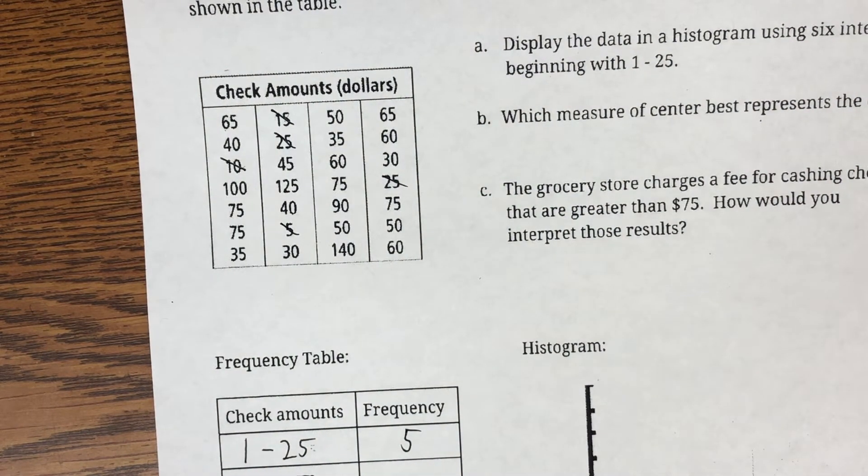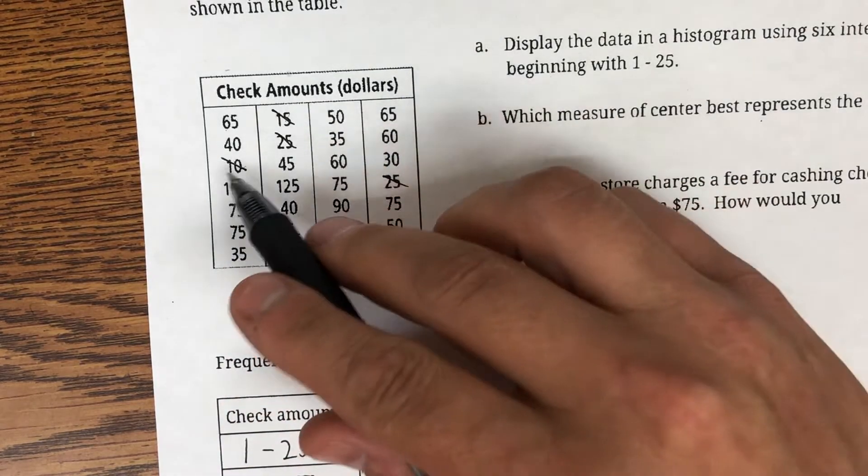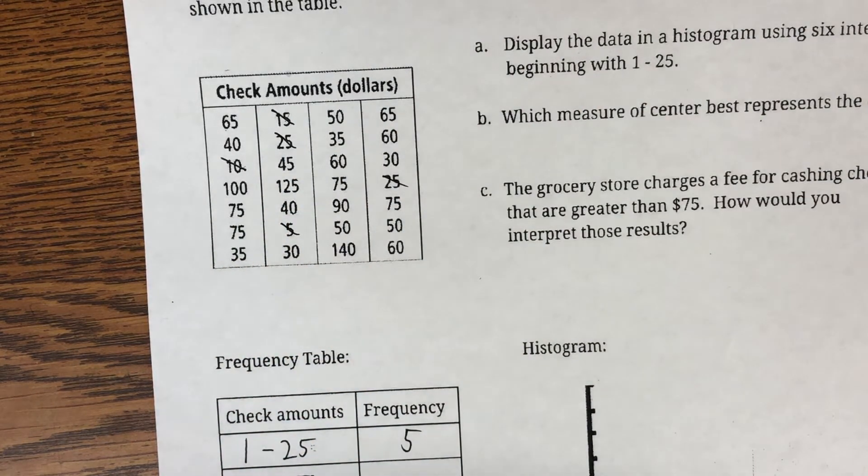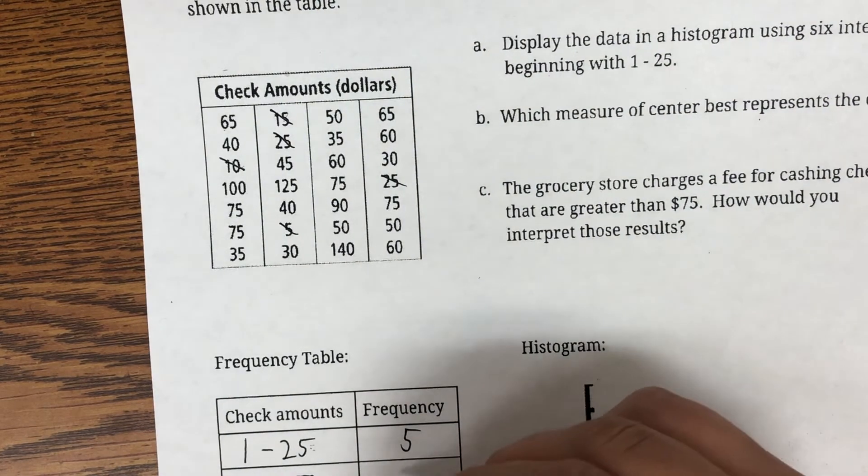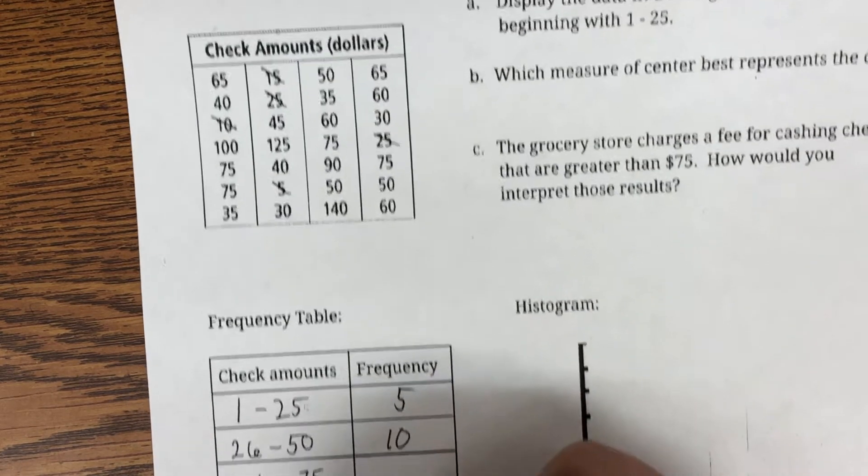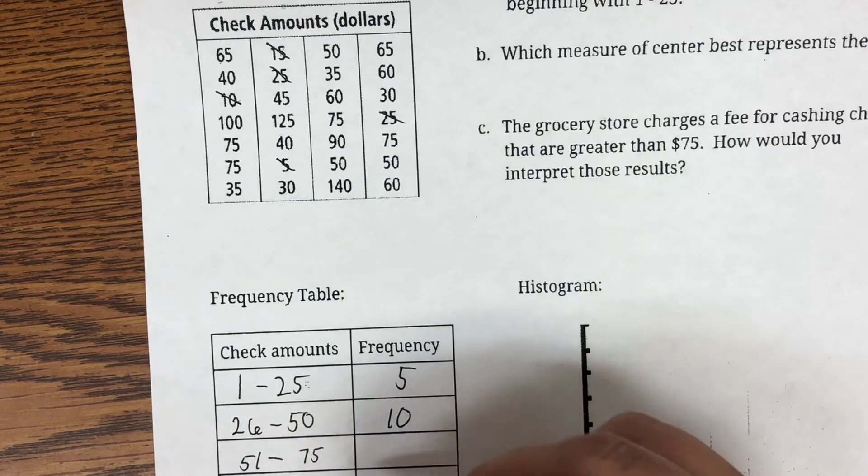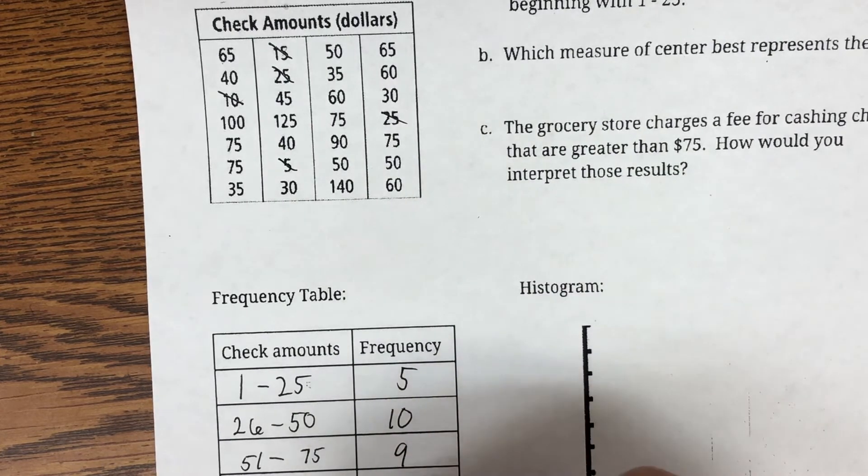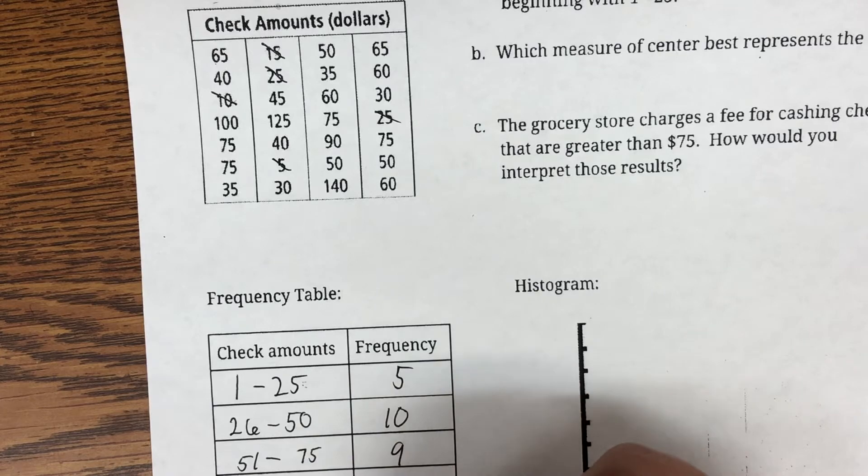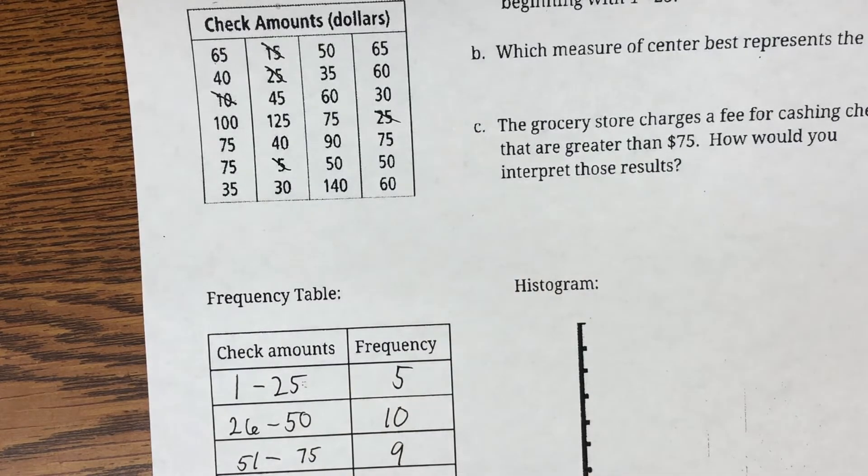You're going to have to be pretty careful as you're looking at the data to see those. So, I have $5 that are between $1 and $25. So, when you're going through those, you're going to have to be pretty careful as you're counting these up. Take your time. Cross them off as you go so you don't count more than once. Now, from $26 to $50, there are 10. Between $51 and $75, there are 9. And then 2, 1, and 1.